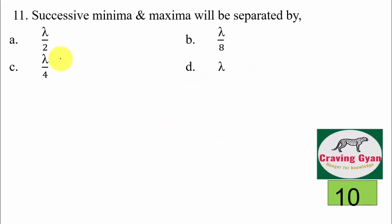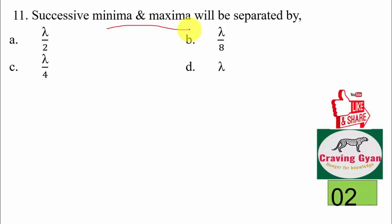Question number 11: successive minima and successive maxima will be separated by — first option lambda by 2, second option lambda by 8, third option lambda by 4, and fourth option lambda. We know that successive minima and successive maxima will be separated by a distance of lambda divided by 2, hence the suitable option is option number A.